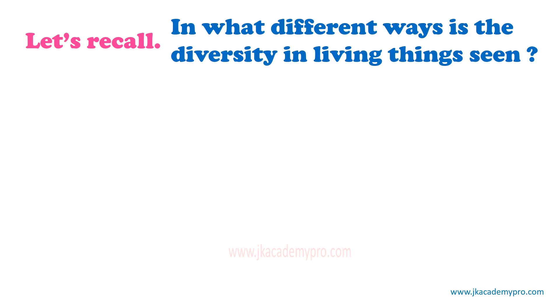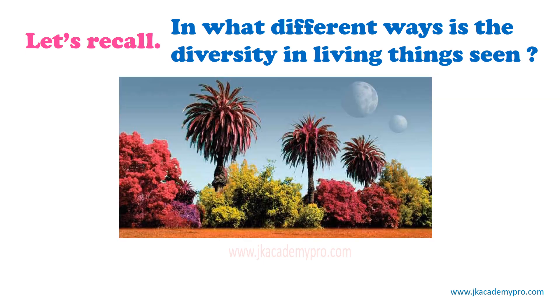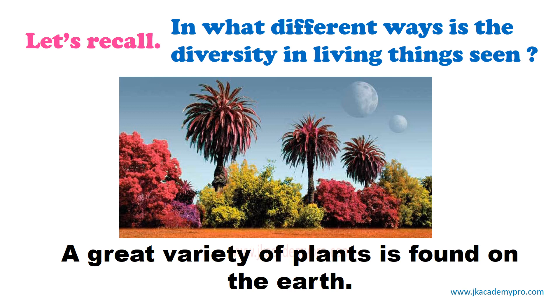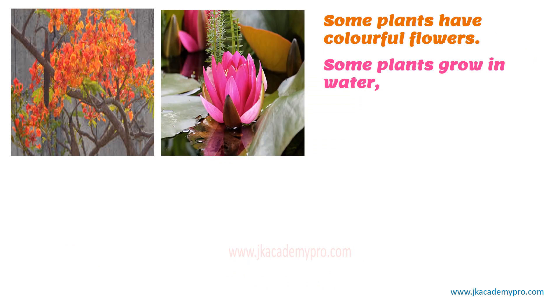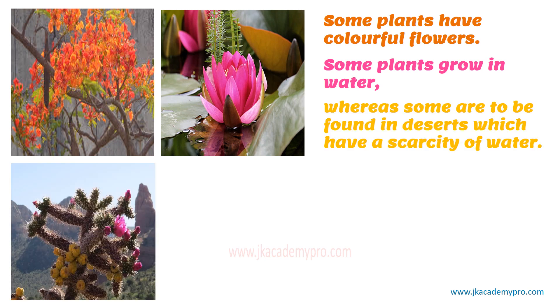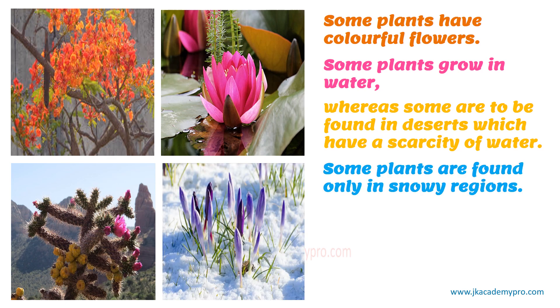Before we begin, let's recall what we learned in the previous standard. In what different ways is the diversity in living things seen? We had studied that there is a great variety of plants found on the earth. Some plants have colourful flowers. Some plants grow in water, just like the lotus, whereas some are to be found in deserts which have a scarcity of water — meaning there is very little water or sometimes no water at all. Some plants are found only in snowy regions.